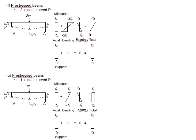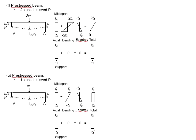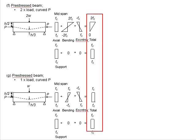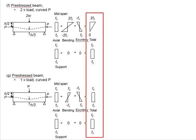The ultimate goal is to obtain the final stress in the member and check it against the allowable limits. As long as the stress is within the acceptable limits, the section will pass.